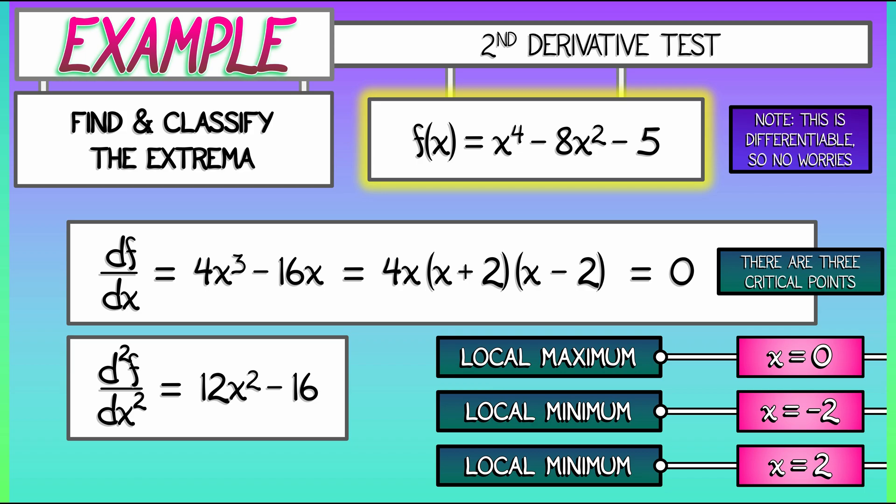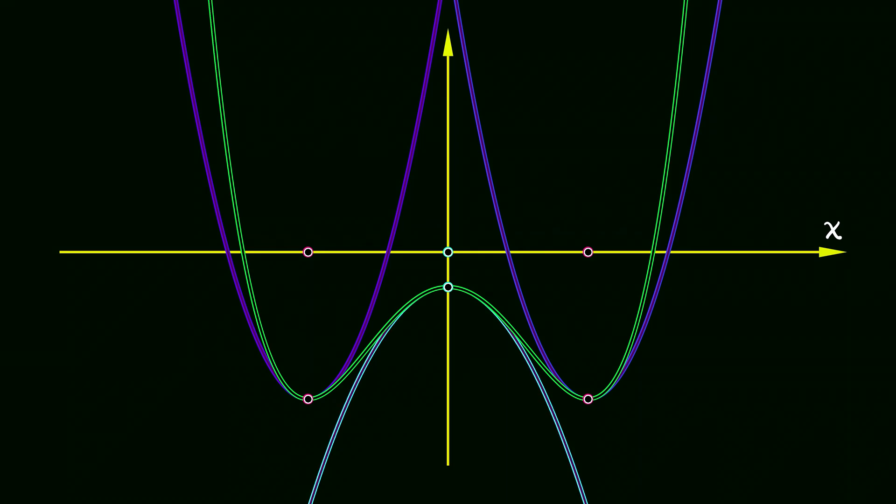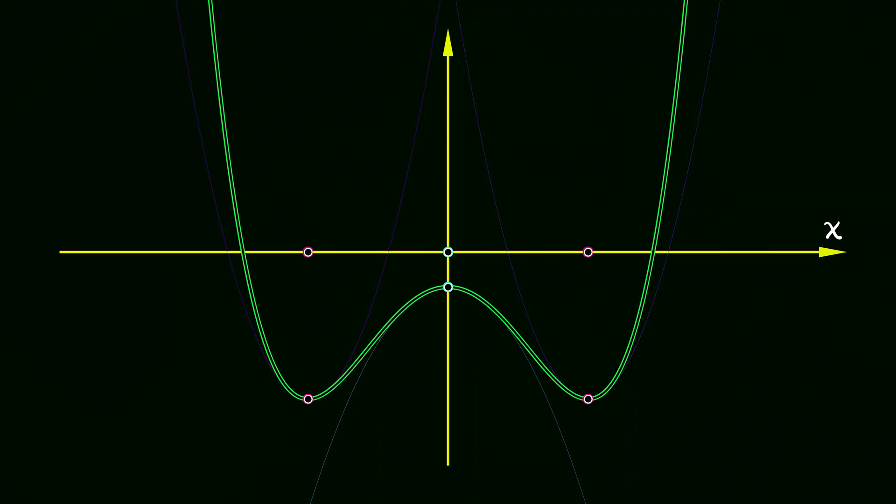And all of this checks out when we actually graph the function. We can see where the critical points are. We can see where the critical values are. And we can see that the approximations to the function at the critical points gives you these paraboli that open up or down depending on the sign of the second derivative. That's the second derivative test and that's why the second derivative test works.